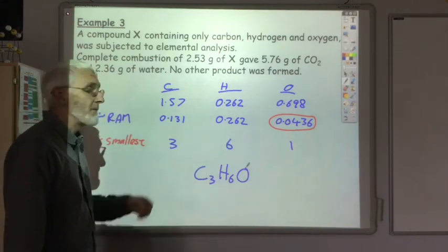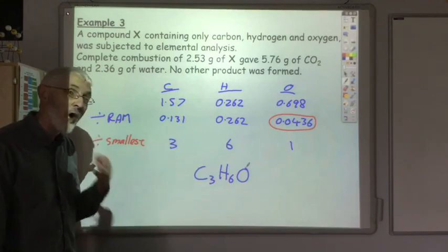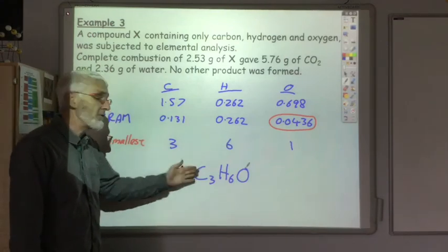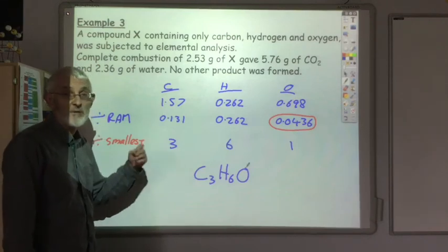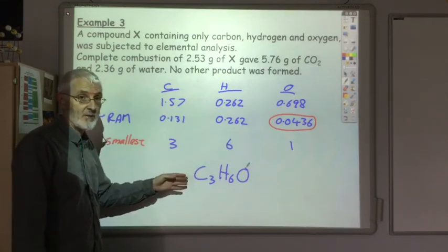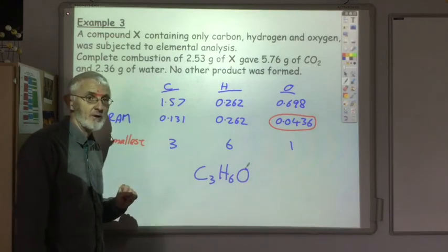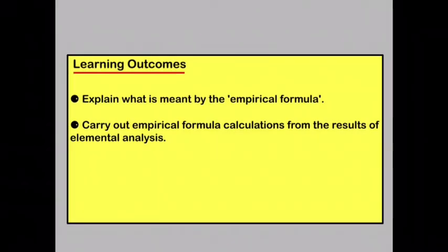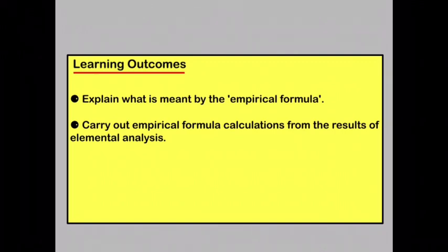So from elemental analysis we get an awful lot of information. We can determine the empirical formula, which is a huge help in trying to work out the structural formula of our unknown white powder. You should now be able to explain what is meant by the term empirical formula, and you should be able to carry out empirical formula calculations from the results of elemental analysis.